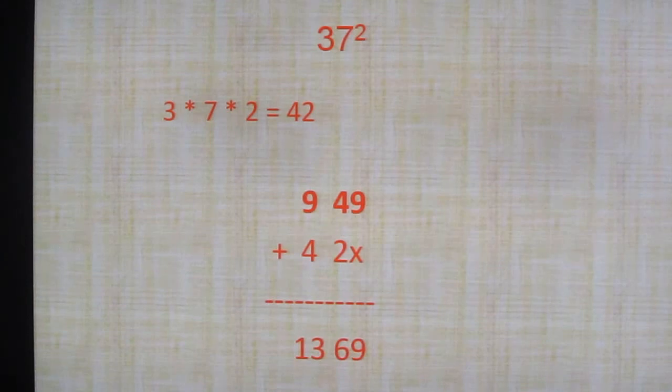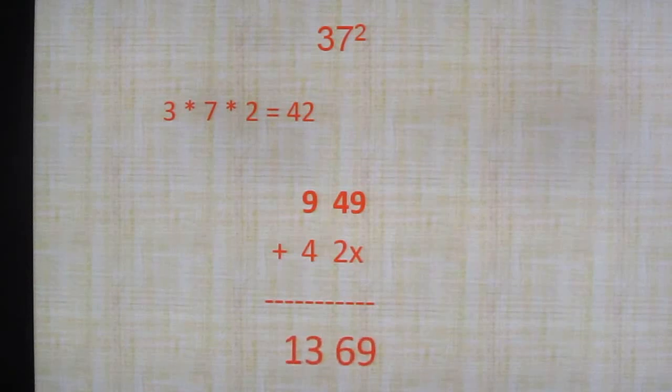So how we got this answer? 37 square as 1369, we use the method algebra. A plus B whole square. We took A as 3, B as 7. Let's move on to the next question. So 37 square equal to 1369.